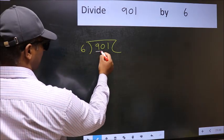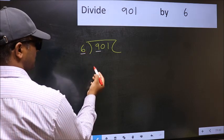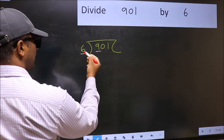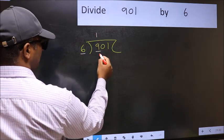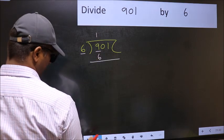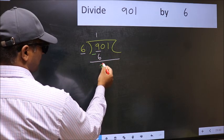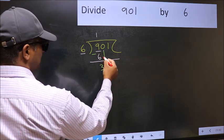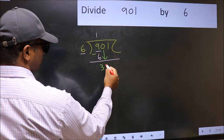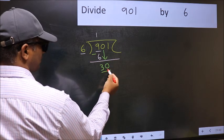Here we have 9 and here 6. A number close to 9 in 6 table is 6, 1, 6. Now you should subtract 9 minus 6, 3. 30. After this, bring down the beside number. So 0 down. Now 30.